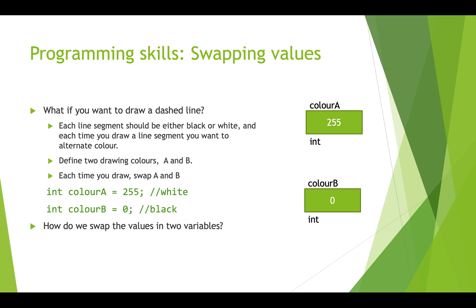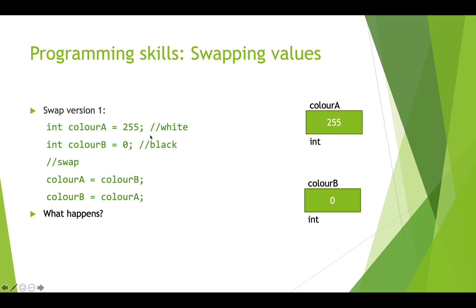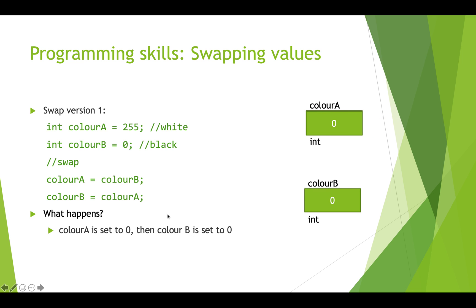So how do we go about doing this? In swap version one, you might think we can just do this: set colorA to colorB, and set colorB to colorA. That looks like it should work, but because program statements are executed sequentially one after another, you'll see this isn't going to work. What happens on the first line is colorA gets set to zero, and colorB is still zero because we've copied what was in colorB into colorA.